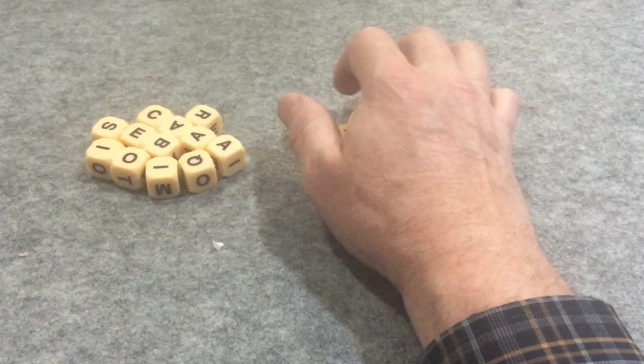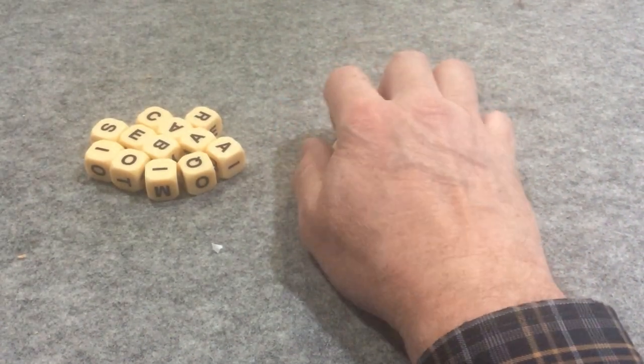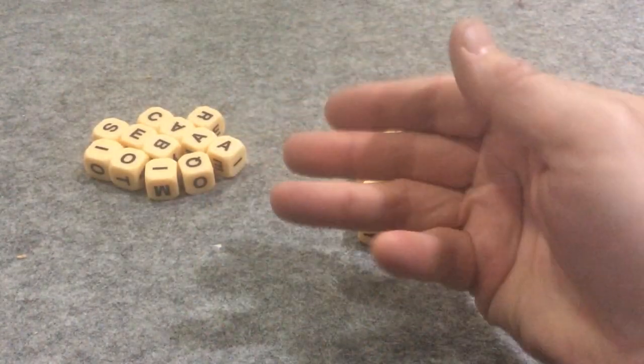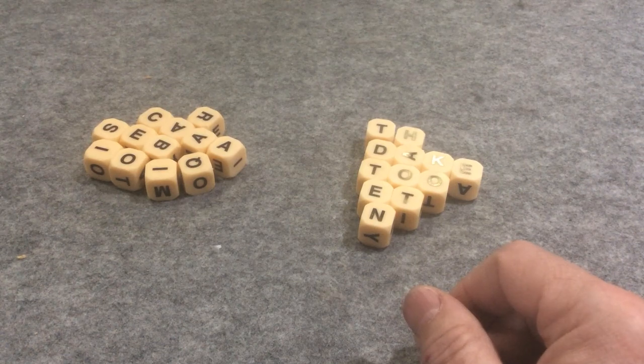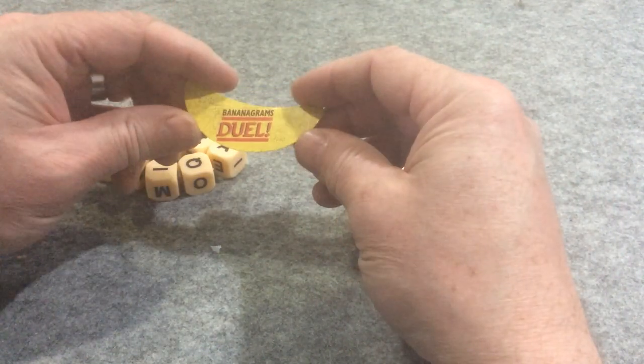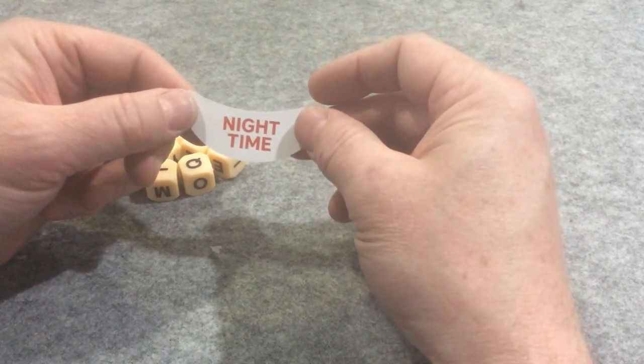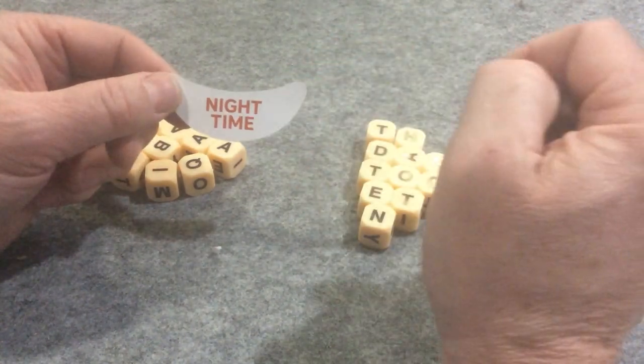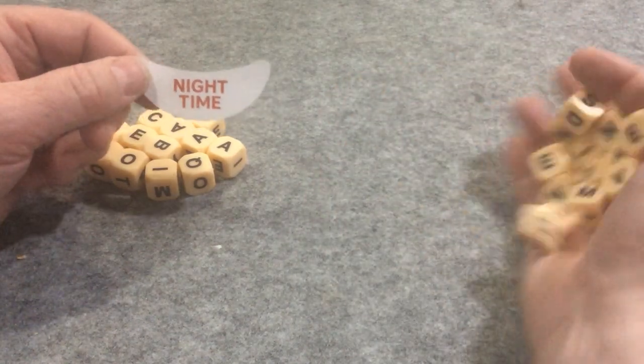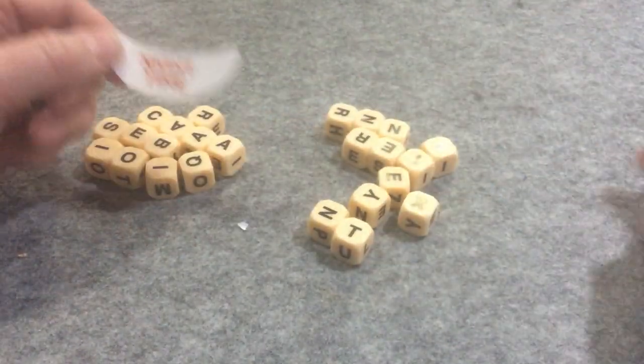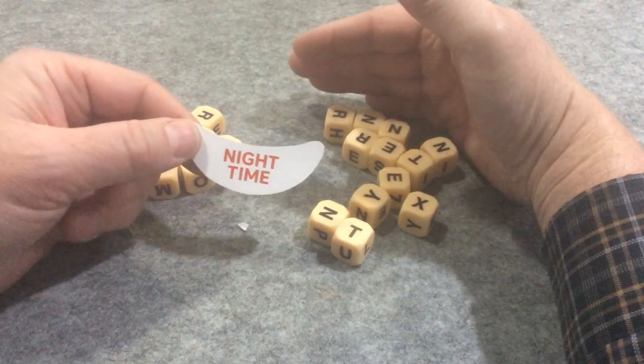Now you can also do a variation on this in that you're playing the same way, so you get your 12 dice each and you are rolling them, making your words and so on. But for each one, you're going to have a theme to the puzzle. So, nighttime.